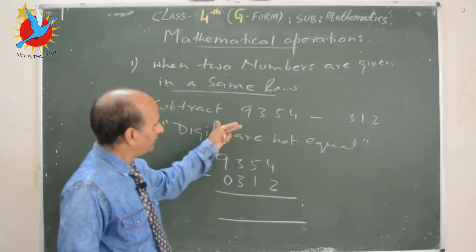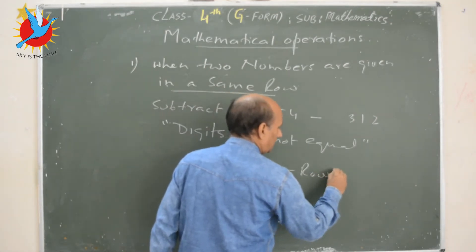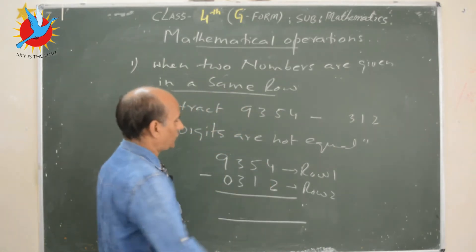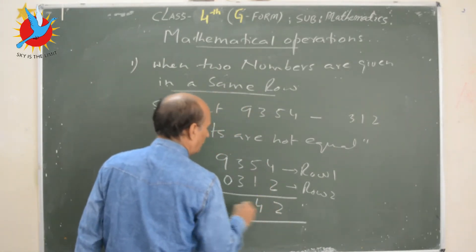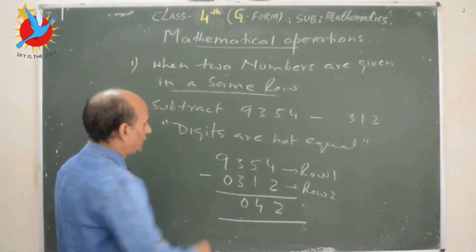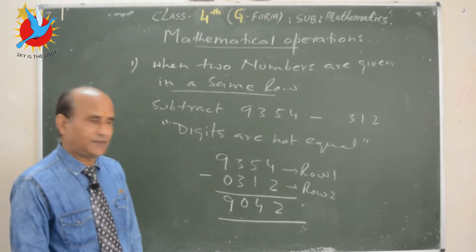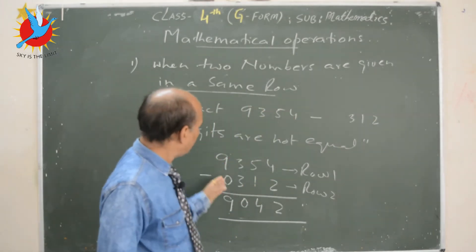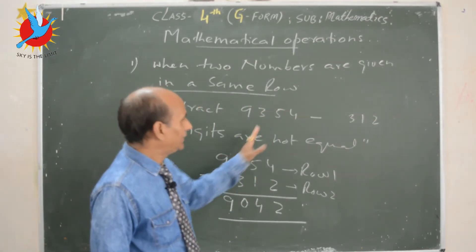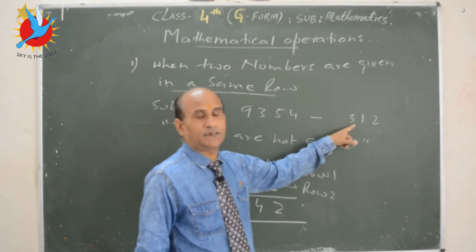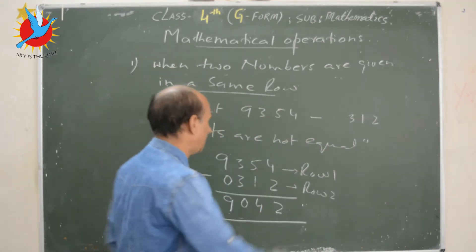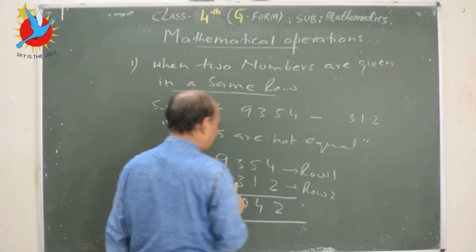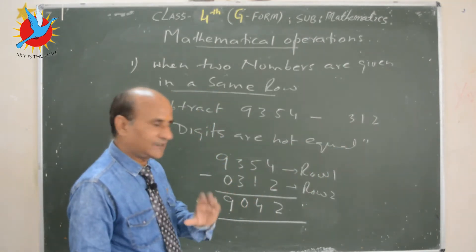Now the digits are balanced. It becomes row one and row two. Subtract: 4 minus 2 is 2, 5 minus 1 is 4, 3 minus 3 is 0, and 9 minus 0 is 9. So first count the digits — if digits are the same, start writing from the left side. If digits are different, start from the right-hand side: write the last digit, then second last, then third last, and subtract. You can balance digits by putting 0.